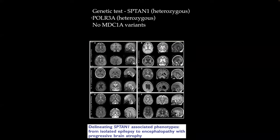The genetic test showed two heterozygous mutations, both variants of uncertain significance with no phenotype correlation. Reanalysis showed the same mutations with no significance. This is just an example of SP-TAN1. The case is open for further differentials and comments. There are cysts in the cerebellum on both sides.